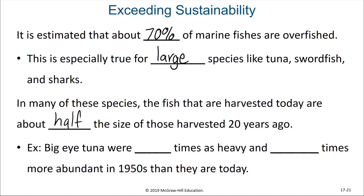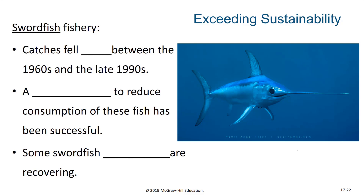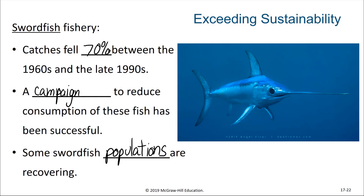As one example, bigeye tuna were two times as heavy and eight times more abundant in the 1950s than they are today. In the swordfish fishery, catches fell 70% between the 1960s and the late 1990s. And this wasn't due to lack of effort — fishing effort was probably increasing three to four times what it had been. A campaign to reduce consumption of these fish has been successful, and we've seen that some swordfish populations are recovering as we've reduced some of this pressure on them.